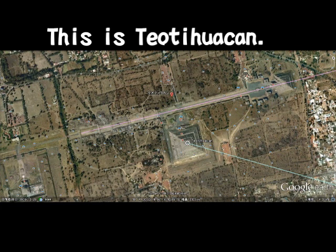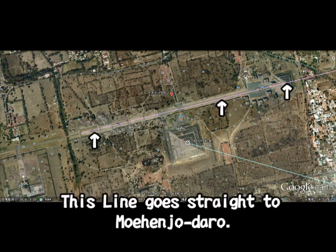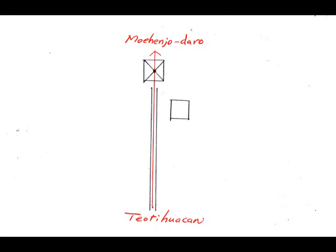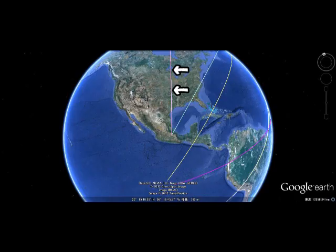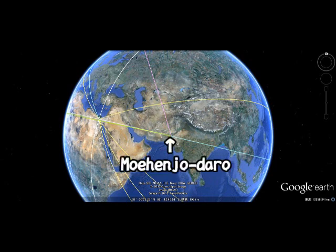This is the main front approach to the Pyramid of the Moon. This is the road — go straight, really go straight along with this front approach road. It will take you very sharply to Mohenjo-daro in Pakistan.